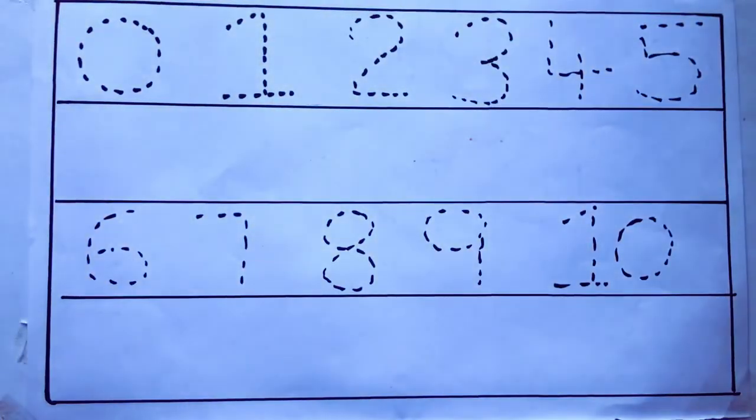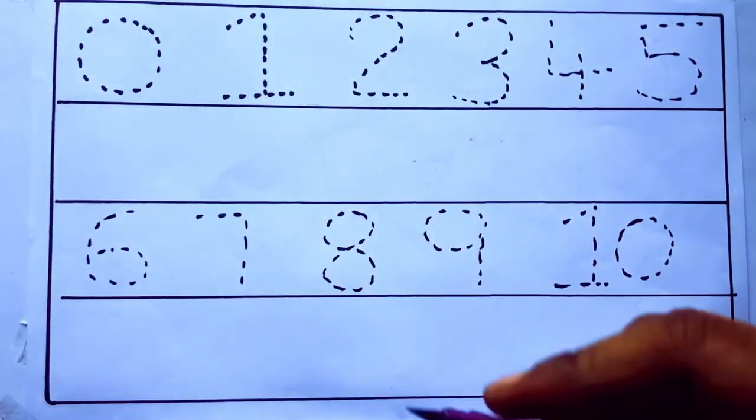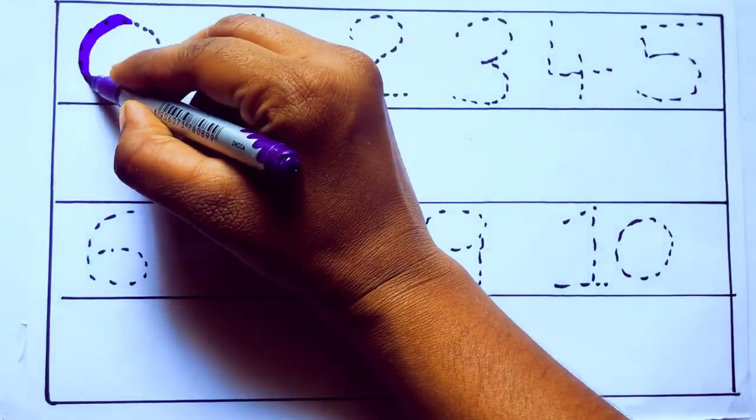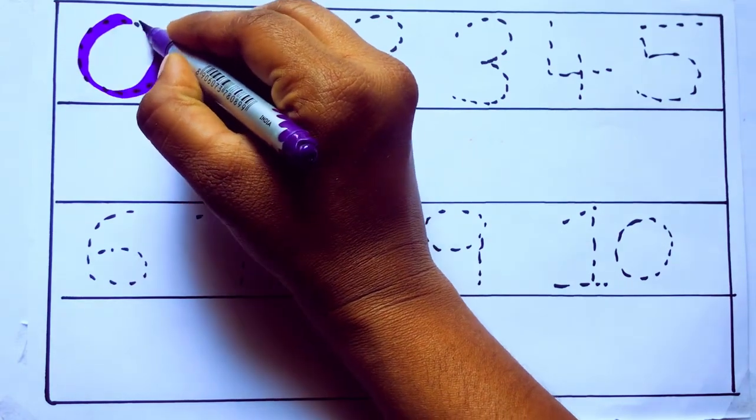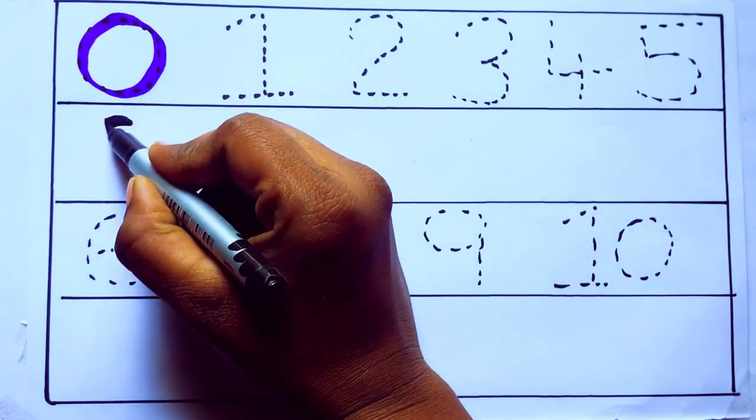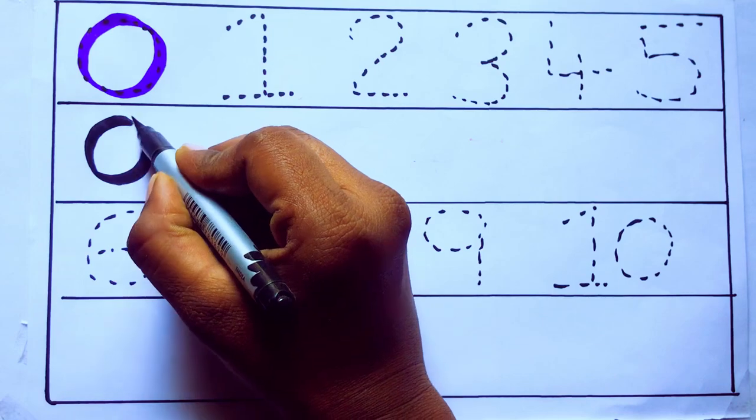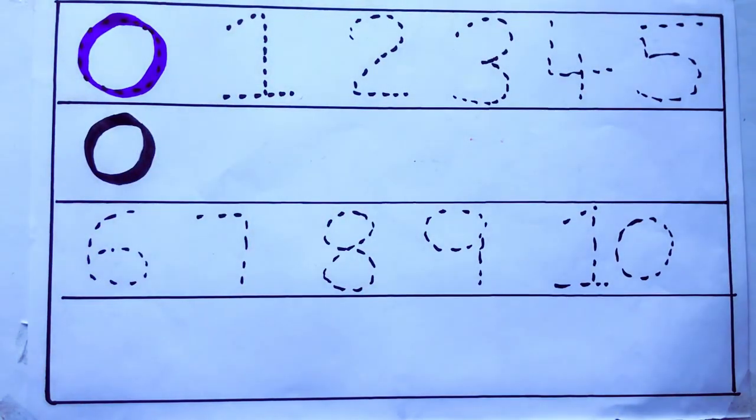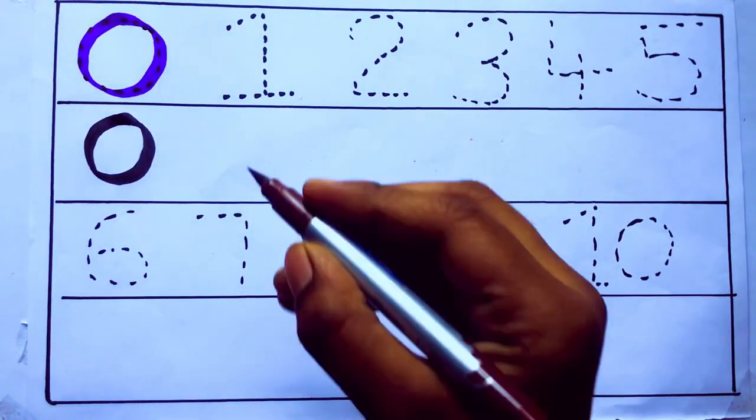Let's draw numbers. Violet color 0, Z-E-R-O. 0. 0.